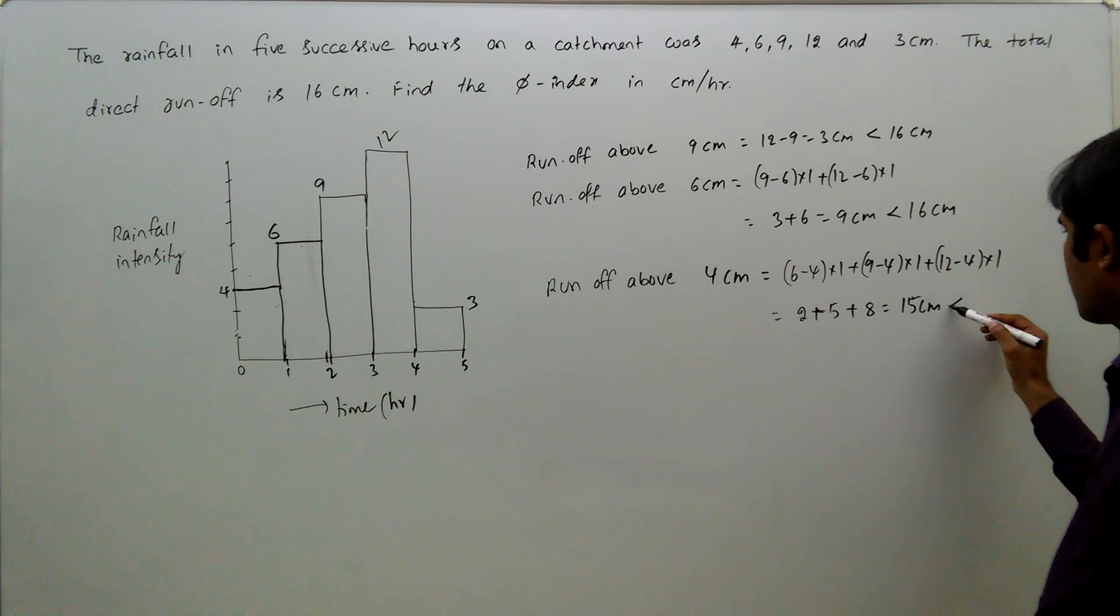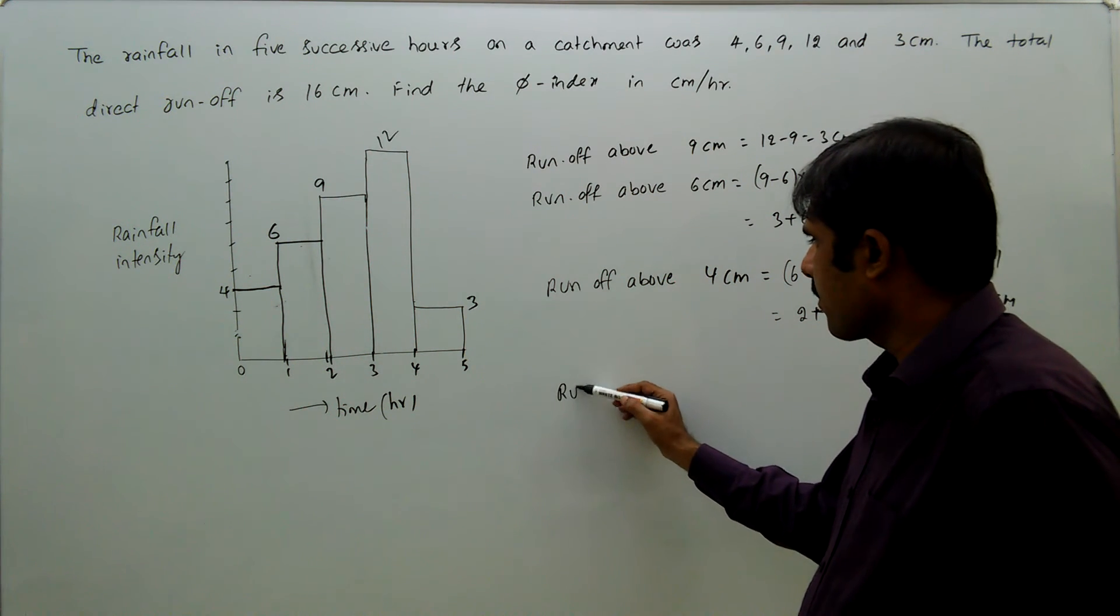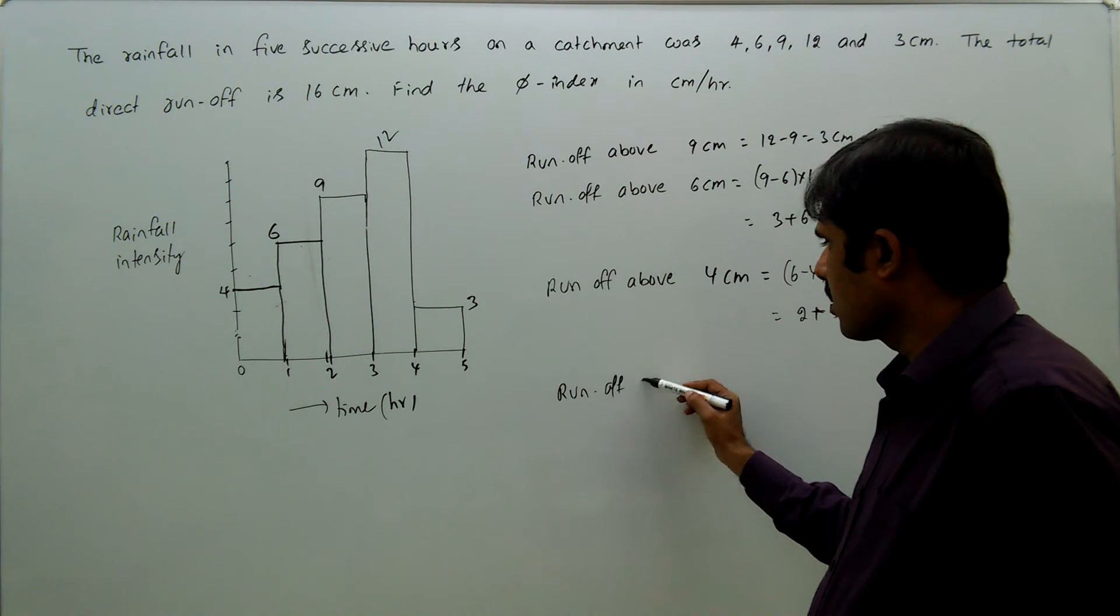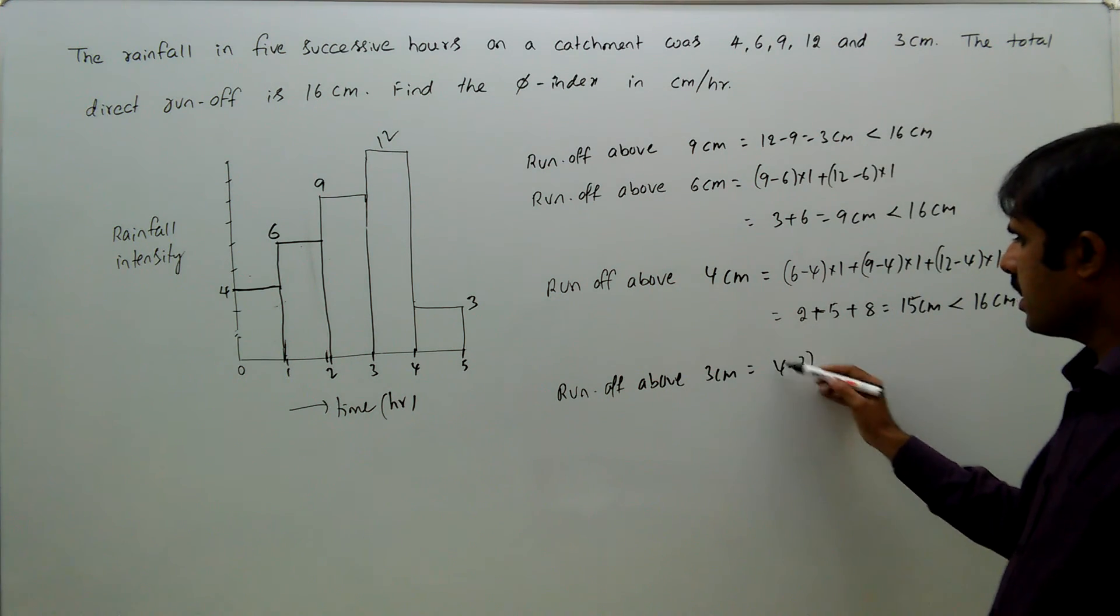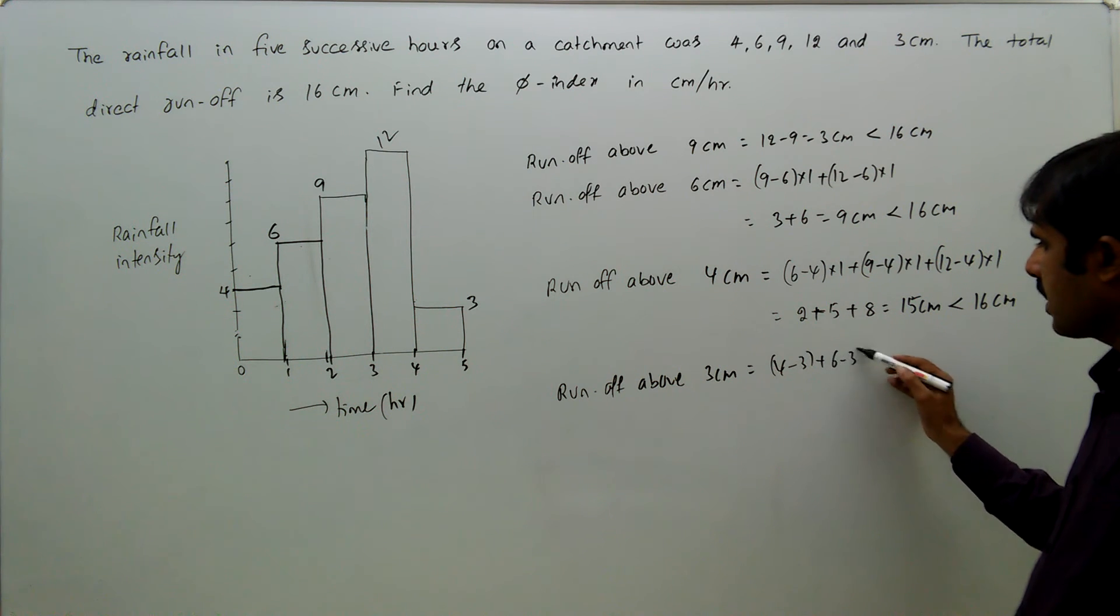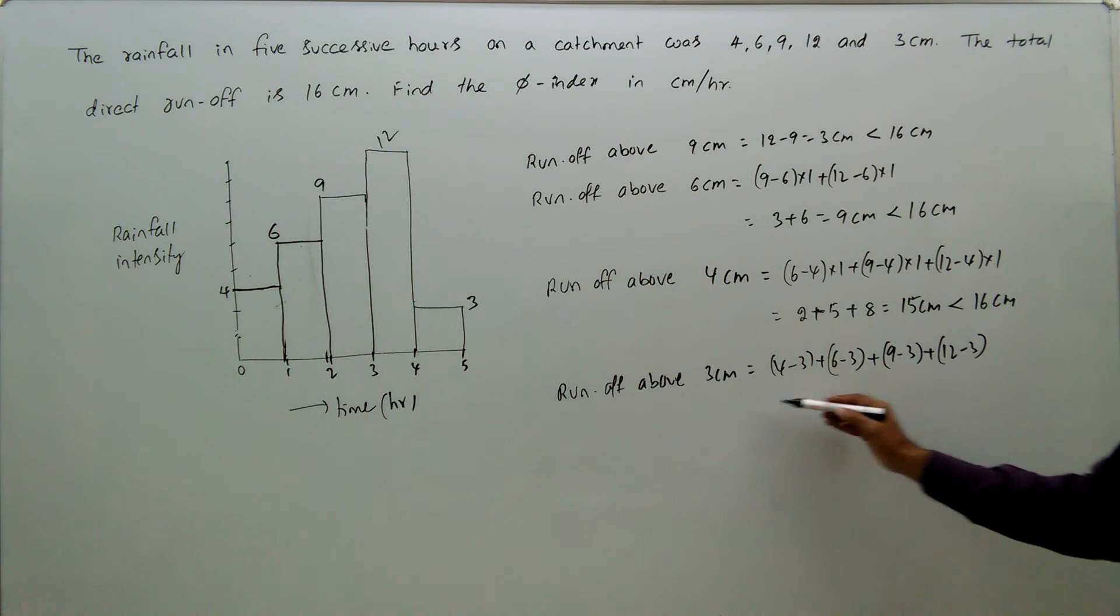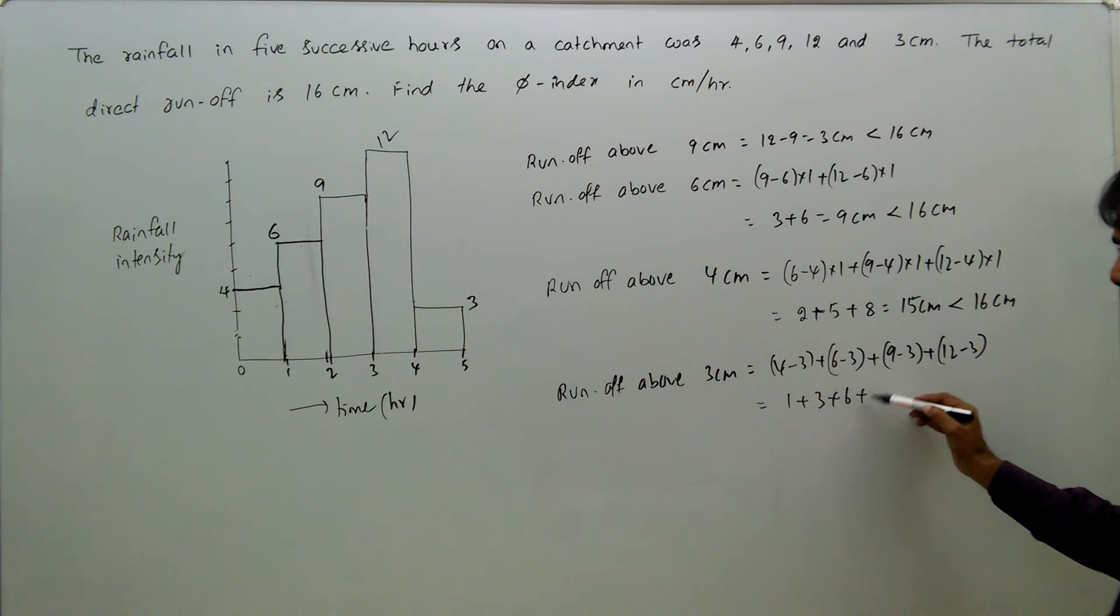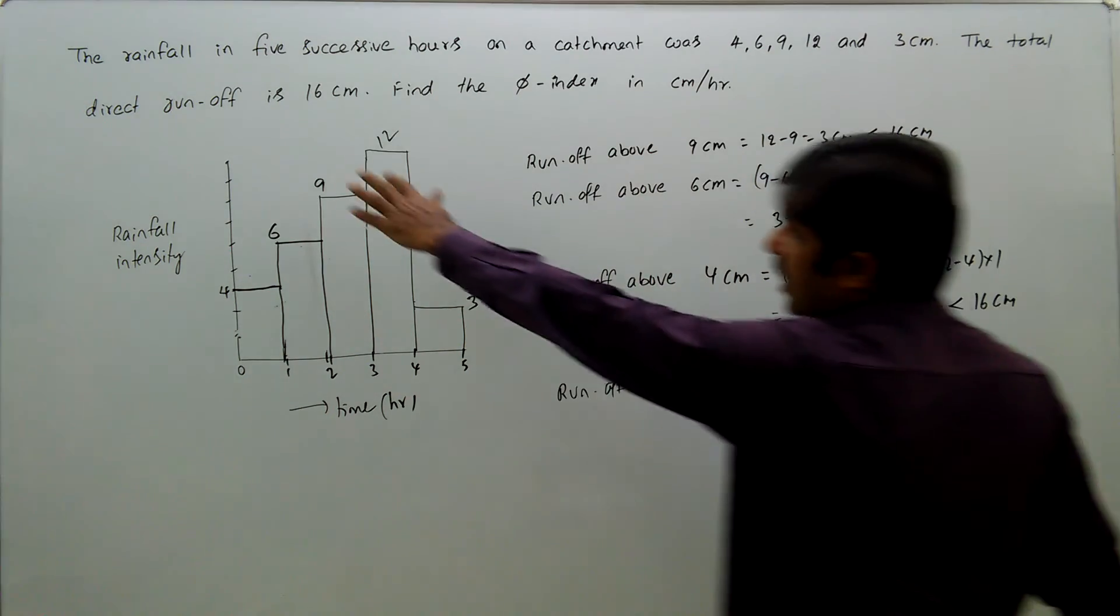Now runoff above 3 centimeters equals 4 minus 3 plus 6 minus 3 plus 9 minus 3 plus 12 minus 3. That is 1 plus 3 plus 6 plus 9, that is 19 centimeters, which is more than 16 centimeter. So required direct runoff is 16 centimeter.